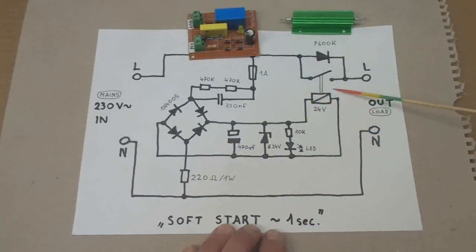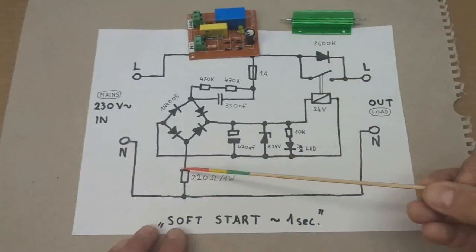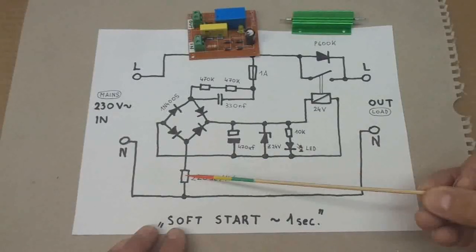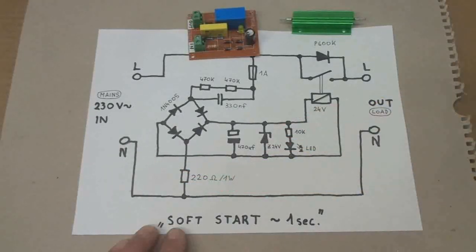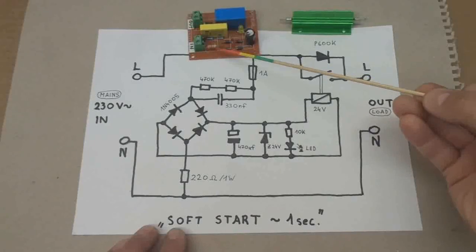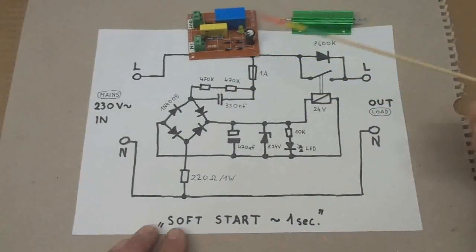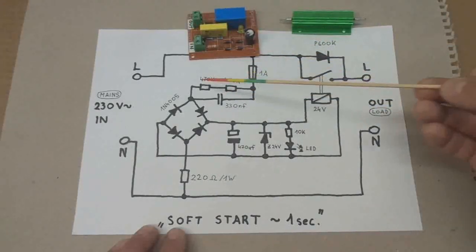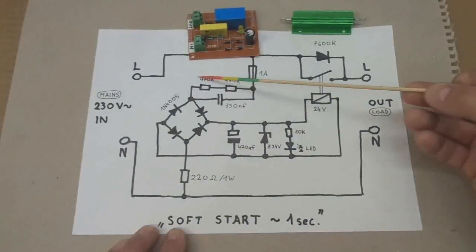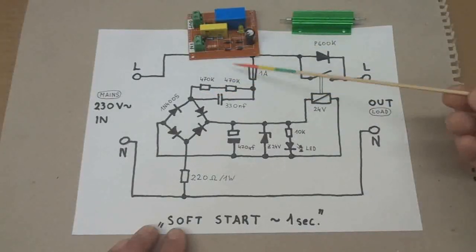I also added a 220 ohm inrush current limiting resistor, which is this one here. And of course, the capacitive dropper has bleeding resistors, discharge resistors, here two of them to dissipate the load.